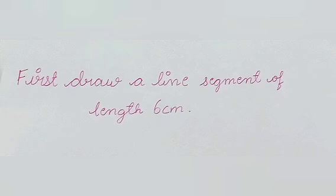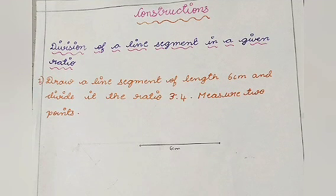Now let's draw a line segment of length 6 cm and mark them as AB and we are going to divide this line segment into the ratio 3 is to 4.